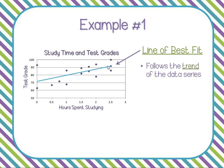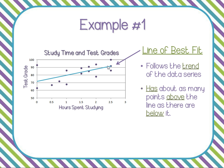One thing to keep in mind about the line of best fit is that in general, you'll have roughly the same number of points above the line as below it. You're kind of splitting your data series in half. In this case, we have six points above the line of best fit and seven points below the trend line — not counting the ones that appear to be more or less on the line itself. Six above and seven below is roughly the same, so that's something to keep in mind when working with the line of best fit.